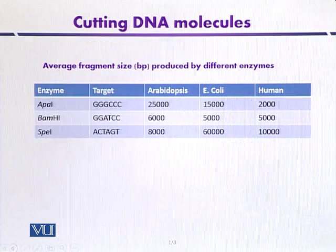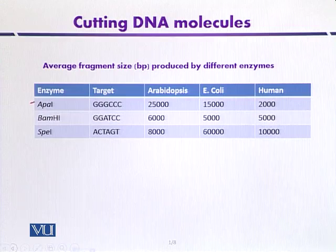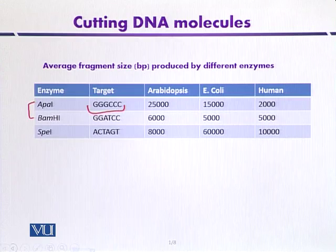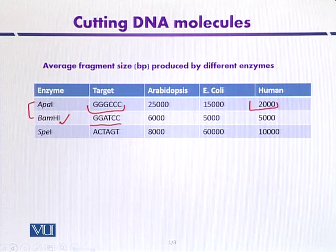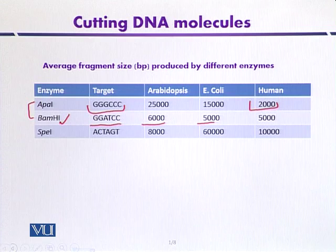This table indicates the average fragment size in base pairs produced by different restriction enzymes. Taking the first example, APA1 recognizes a 6 base pair sequence. In the case of Arabidopsis, which is a model plant, this sequence can be repeated after every 25,000 base pairs. In the case of E. coli, after every 15,000 base pairs. And in the case of humans, after every 5,000 base pairs, and so on for other microorganisms.